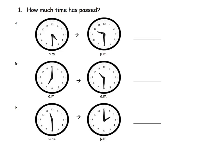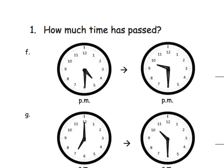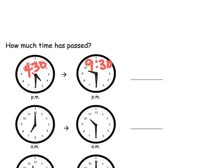So this is the exact same thing, only first we have to read the clocks and then decide the elapsed time. Let's zoom in on this first set of clocks. This one's 4:30 and then this one is 9:30. So our elapsed time is 5 hours. That one's pretty straightforward because we go from 4:30, 5:30, 6:30, 7:30, 8:30, 9:30 — so that's 5 hours.